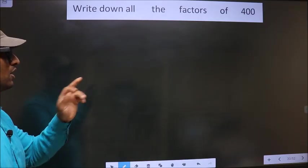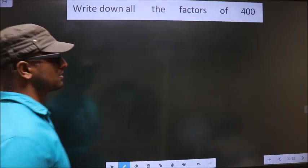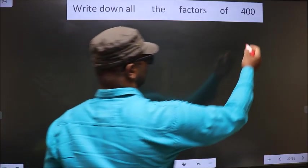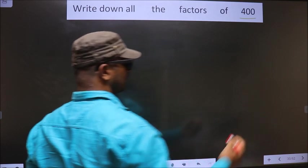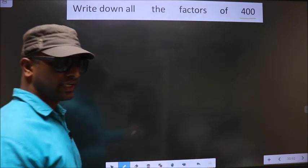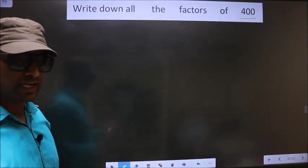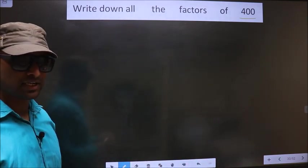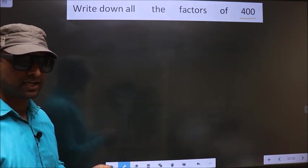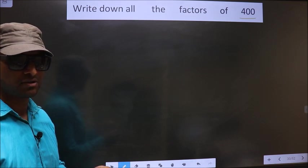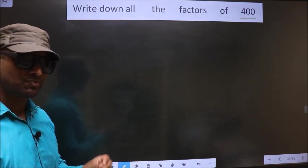Write down all the factors of 400. To write all the factors of 400, first we should do the prime factorization of it.